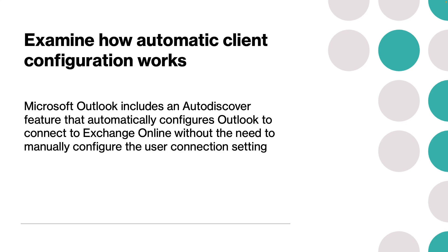The process works like this. When an Outlook user enters their email and password, based on the email address information and an auto-discover record on the internet-located DNS, the client locates the auto-discover service in Microsoft 365. Then the client provides their SMTP address and password to authenticate with the auto-discover service. Then Microsoft 365 provides connection settings in an XML configuration, and Outlook connects to Exchange Online in Microsoft 365.